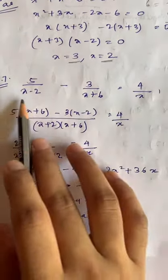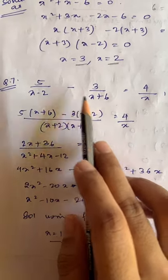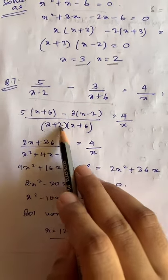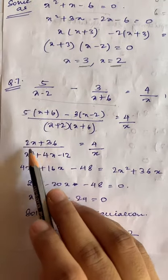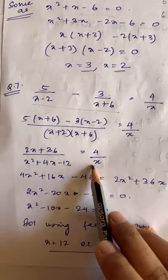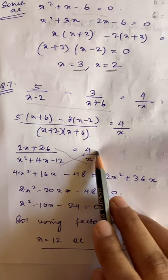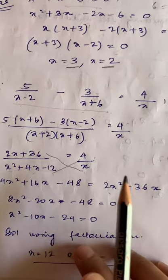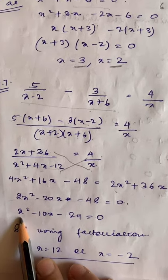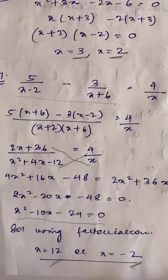Another equation not in standard form. Taking LCM of (x + 2) and (x + 6): the numerator becomes 5(x + 6) - 3(x + 2) and the denominator is (x + 2)(x + 6). After cross-multiplication, we get 4x² + 16x - 48 = 2x² + 36x. Solving and applying factorization gives solutions x = 12 and x = -2.